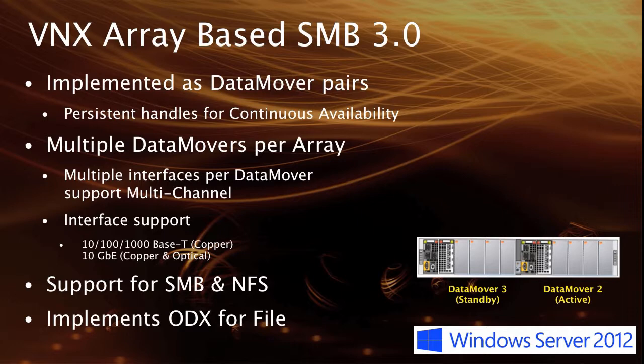Data mover 2, for example, is the active portion and data mover 3 is standby. The two interact, so if there's an SMB 3 share that has continuous availability enabled, then there is persistence of information about file handles, application IDs, and user locks against those files. That is persisted to data mover 3 if data mover 2 goes offline for whatever reason. So we provide continuous availability of those session connectivity requirements.